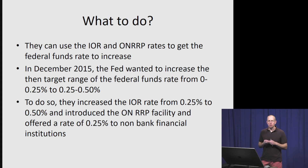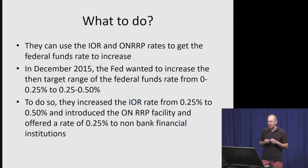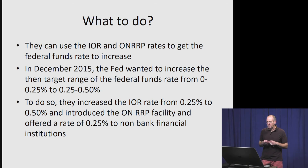As we discussed in the previous video, the Fed introduced the IOR — interest on reserves — and the ONRP rates — overnight reverse repurchase agreements. These two new facilities, these two new interest rates, can help the federal funds rate change in a way that's different than it used to. Starting in December 2015, the Fed wanted to increase the federal funds rate. It felt the economy was strong enough to maintain that increase, and they wanted to increase it from the initial range of zero to a quarter percent, up to a quarter to a half a percent.